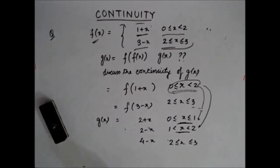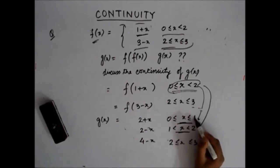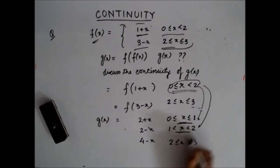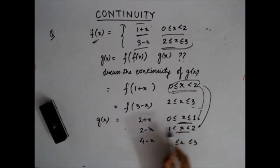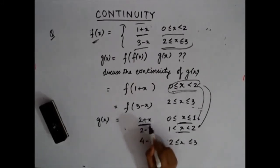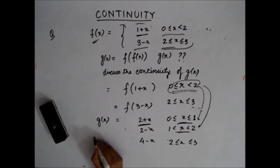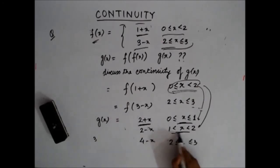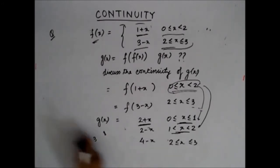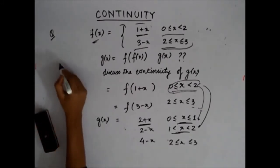Now let's check continuity at the critical points x = 1 and x = 2. At x = 1, the left-hand limit uses the expression 2 + x, giving 3. The right-hand limit uses 2 − x, giving 1. Since left-hand limit 3 ≠ right-hand limit 1, the function is discontinuous at x = 1.